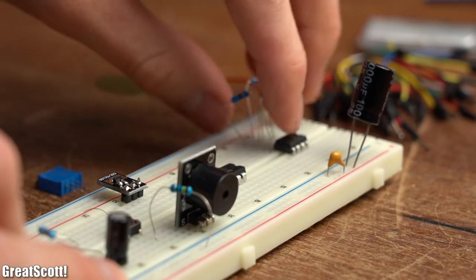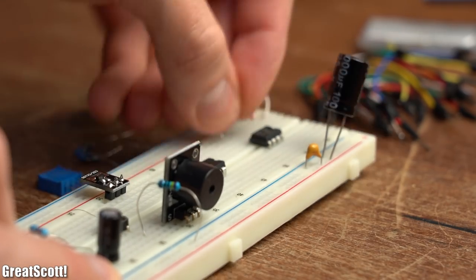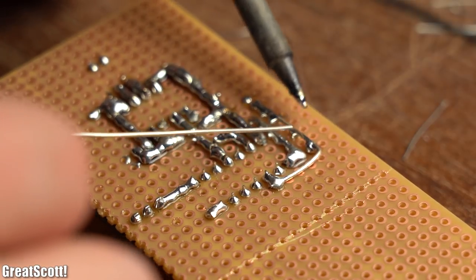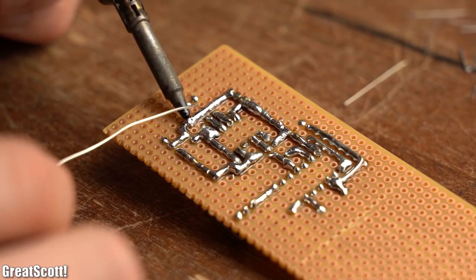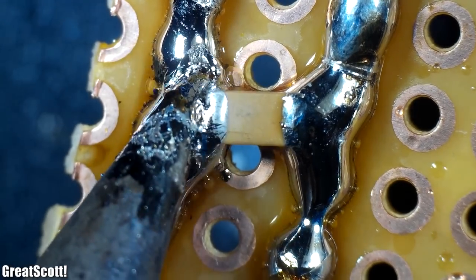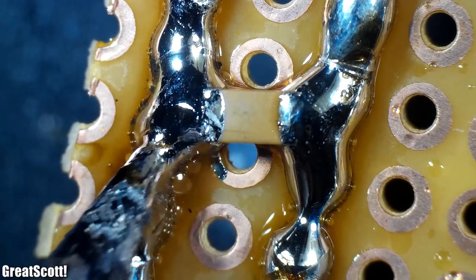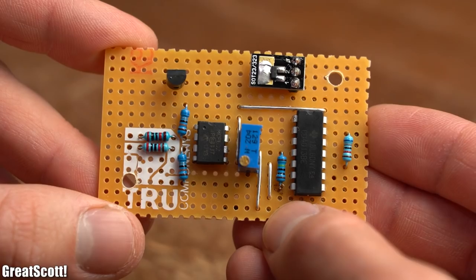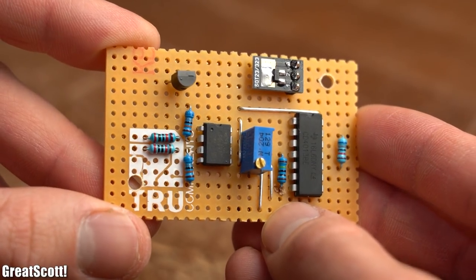At this point I removed all of the components from the breadboard and started soldering them to one another on a piece of perfboard. In order to keep it all as small as possible, I also utilized some rather tiny SMD capacitors. And after around one hour of soldering my perfboard circuit was basically complete.